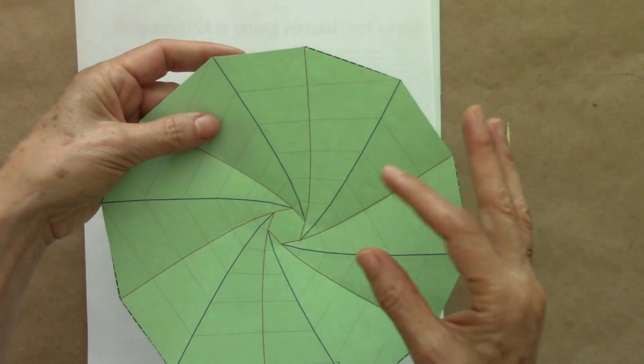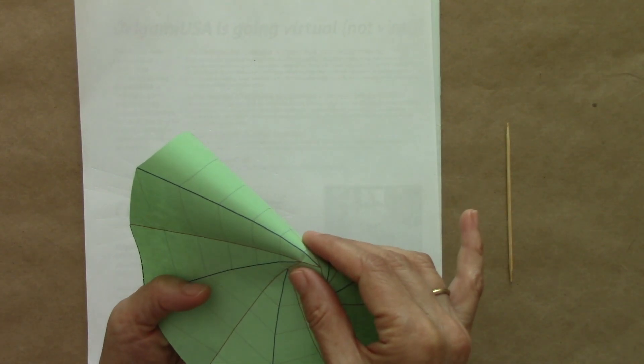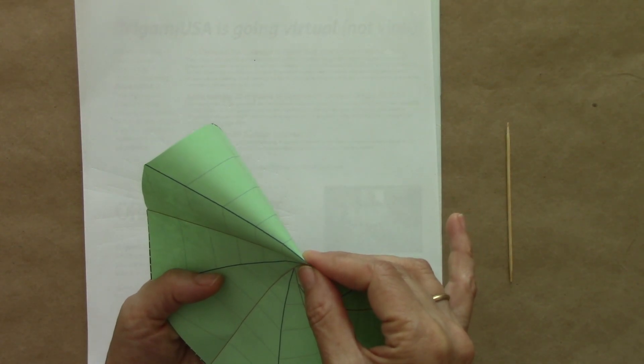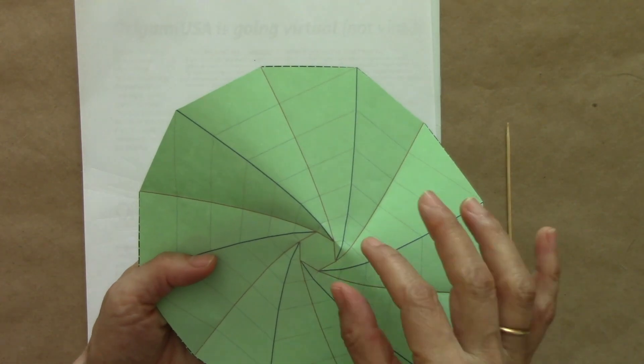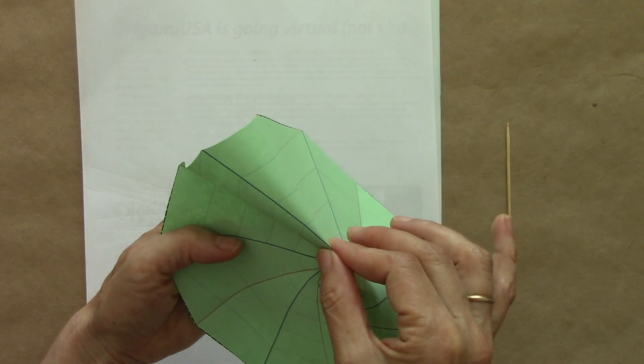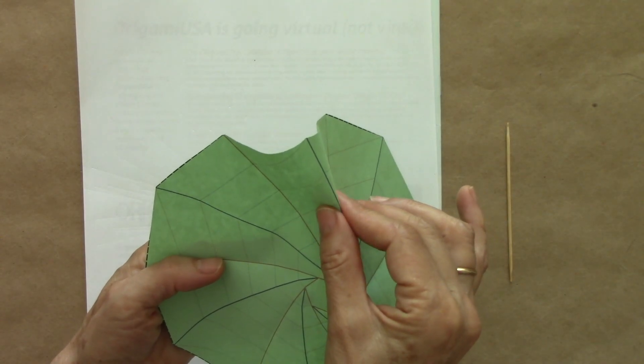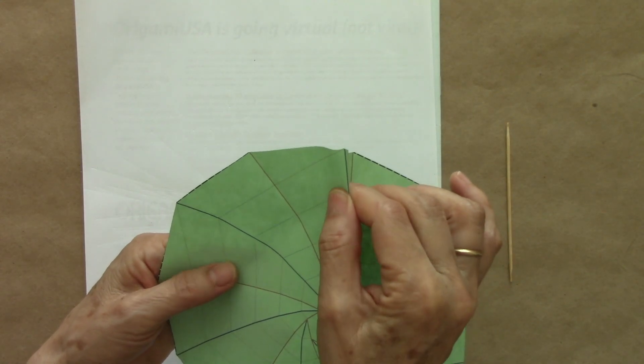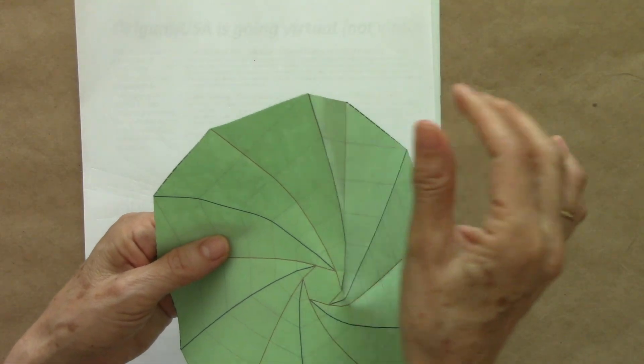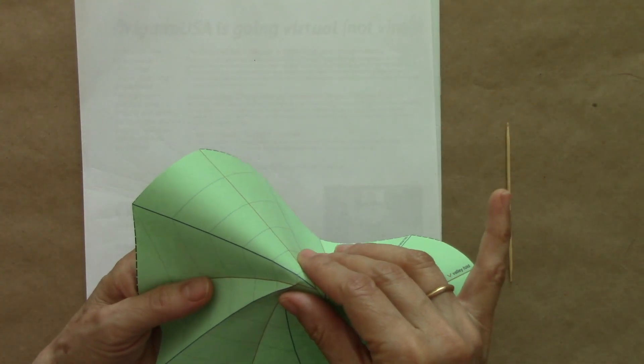Before proceeding to collapse, we want to reinforce them. So section by section on this side it's very easy to pinch them and you see as mountain folds. Very gentle and making sure that each section is pinched and not beyond. We are reinforcing what we did on the back.